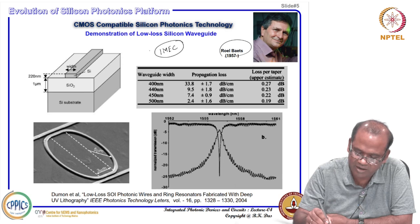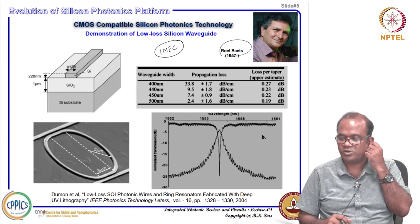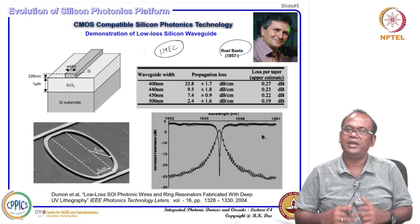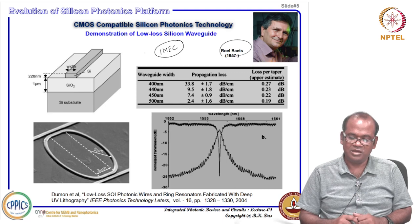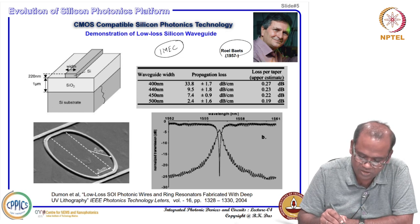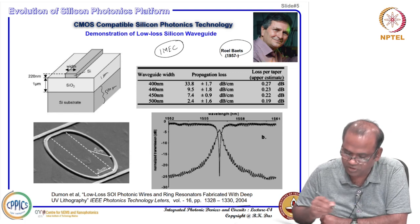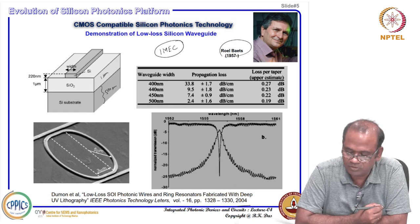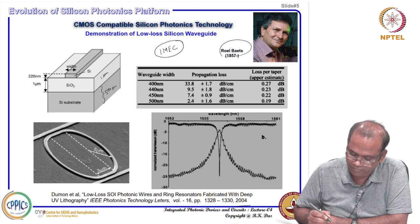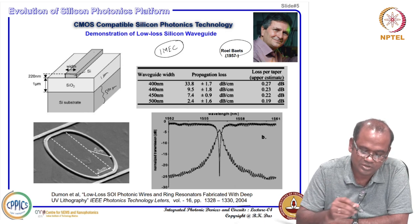IMEC is a foundry facility in Belgium — an inter-university consortium with excellent semiconductor fabrication infrastructure. By exploiting that process technology, Baets and his team demonstrated for the first time a very low-loss silicon waveguide on SOI. The silicon substrate is about 500 µm thick, the BOX layer is 1 µm, and the silicon-on-insulator device layer forms the waveguide structure.